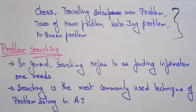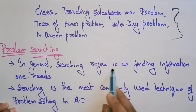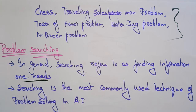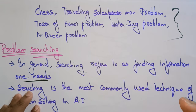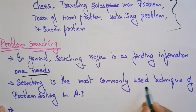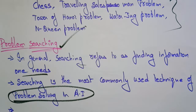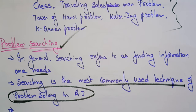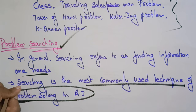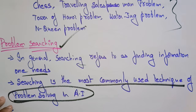Now, moving to problem searching. In general, searching refers to finding information that one needs — for example, searching for a specific page number. Searching is the most commonly used technique for problem solving in AI. While other methods exist, searching is the primary and most commonly used technique for problem solving in artificial intelligence.